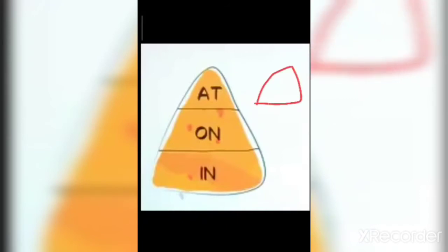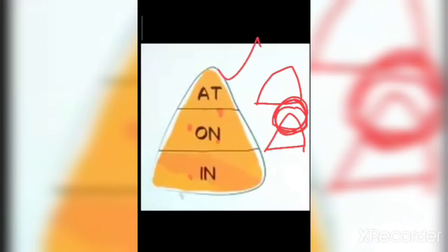You can see here. The dark part is showing a specific point. This part is given a specific point. This means 'at' will be used when you are given a specific point — जब आपको specific point given होगा।